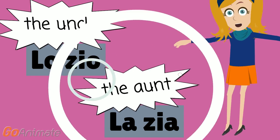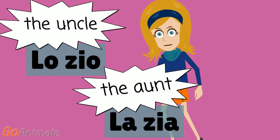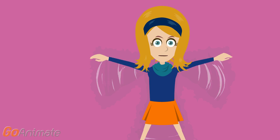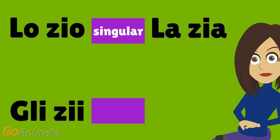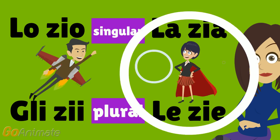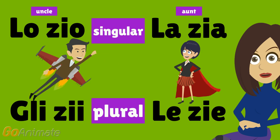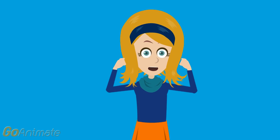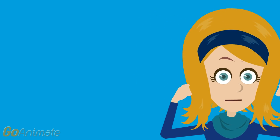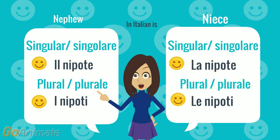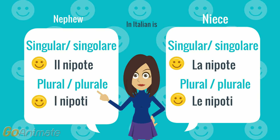And what about the uncle and the aunt? They are perfect for playing, and they are a kind of superhero. Let's discover them in Italian language. If there are an uncle and an aunt, there are also a nephew or a niece. In Italian they are: il nipote, la nipote, i nipoti, le nipoti.